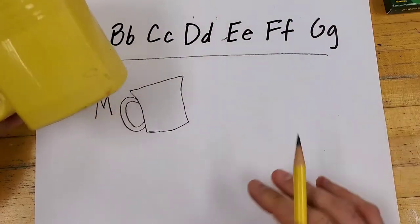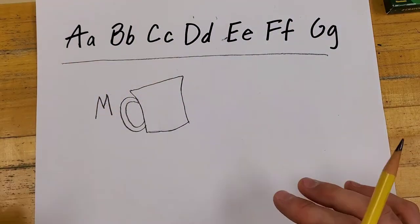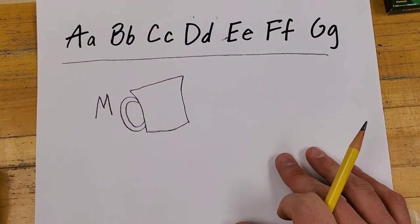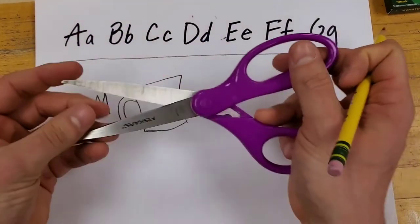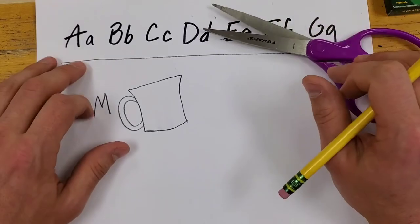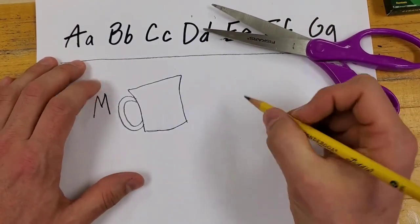So I've got M done, and again, if you want to keep doing this, you could do 10 of these, you could do the entire alphabet. I've got a pair of scissors here, and I believe that scissors start with the letter S.